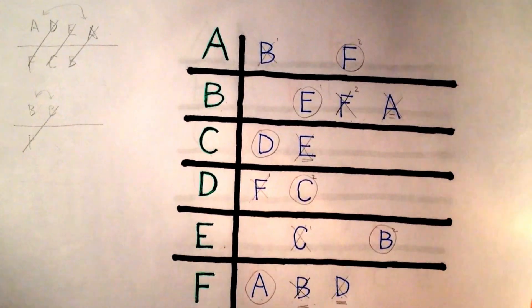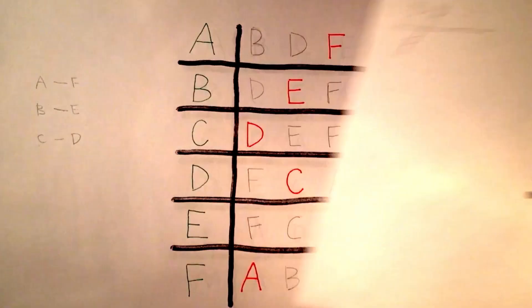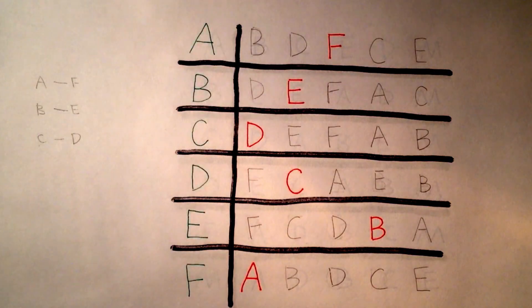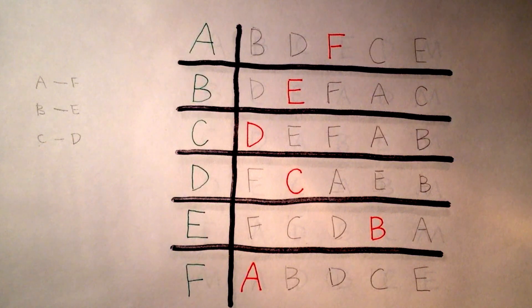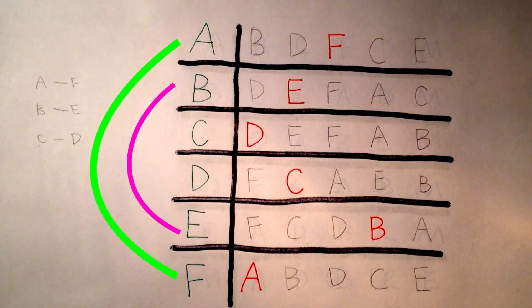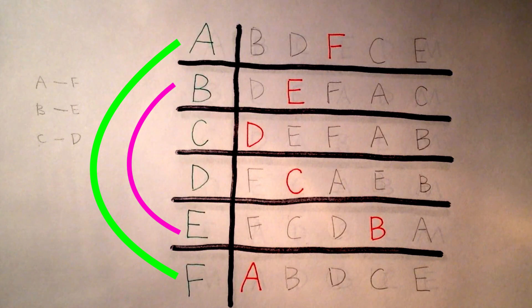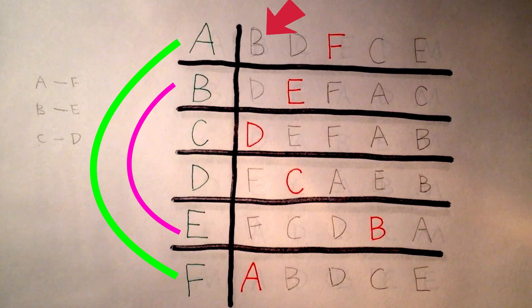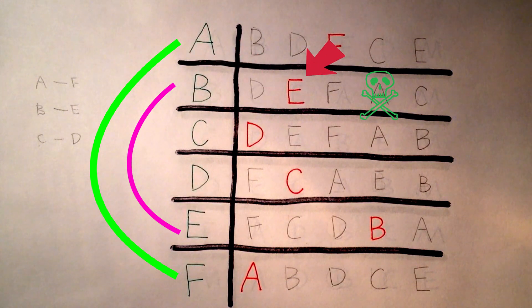This table shows our stable matching solution. It is stable because if you pick any combination of two pairs — say A, F and B, E — none of the participants would want to exchange partners, since they will be happier with their current allocation. For instance, A prefers B over F, but B will not trade E for A, since B prefers E over A.